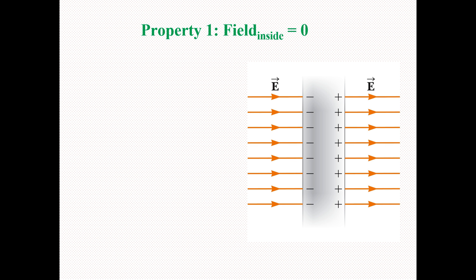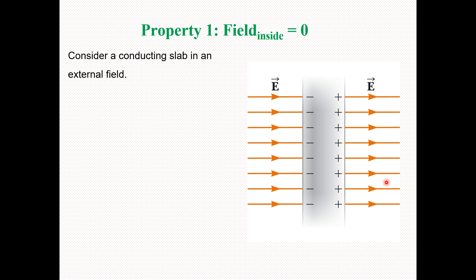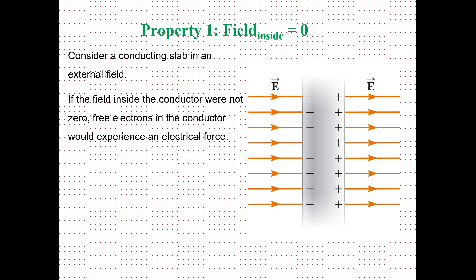Now we explain these properties one by one. Property number one: the field inside is equal to zero. We take a conductor in electrostatic equilibrium, and the condition is that the field inside the conductor is equal to zero. For that, we have the example of a conducting slab in an external field.